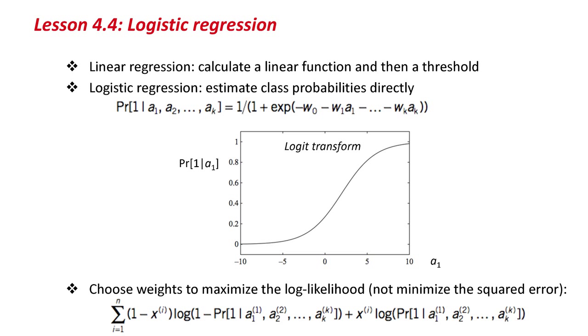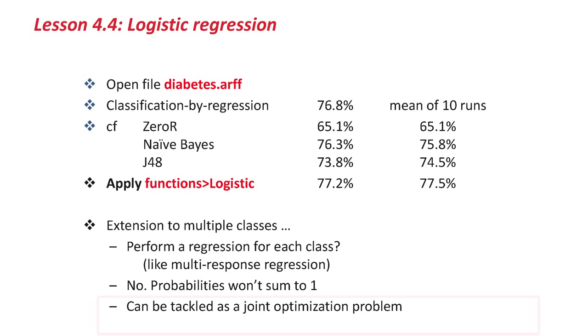When you're working with a logit transform, instead of minimizing the squared error—remember when we do linear regression we minimize the squared error—it's better to choose weights to maximize a different probabilistic function called the log-likelihood function, which is this pretty scary-looking formula down at the bottom. That's the basis of logistic regression. We won't talk about the details anymore. Let me just do it.